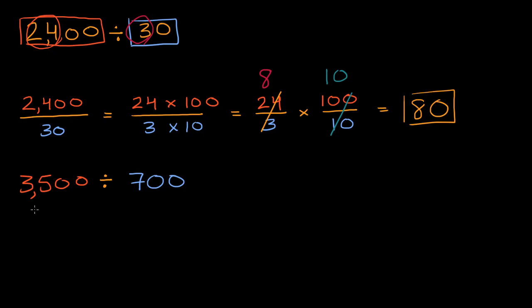As we just did, we could view this as 3,500 over 700. 3,500 we can view as 35 times 100 over 7 times 100. Now the 100s cancel out, and we're just left with 35 over 7. Now what's 35 divided by 7? Well that is going to be equal to 5.